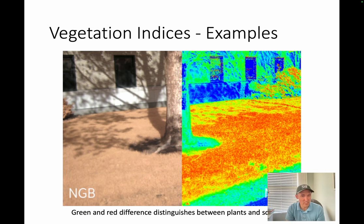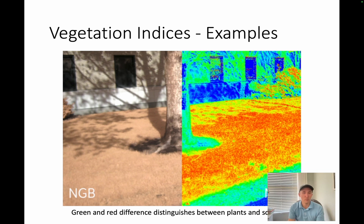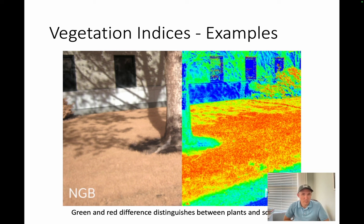There are all kinds of vegetative indices. NDVI and VARI are two of the more common ones, but there are literally probably dozens used from time to time for different purposes. Do a search online to find some different vegetative indices and check out what they're used for. There are some great websites and resources out there, and I'll put some links in the notes to this video.